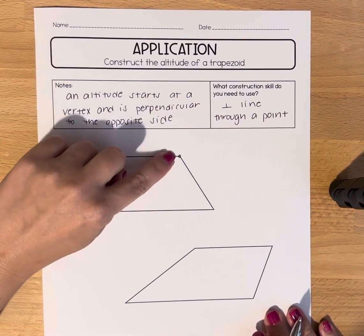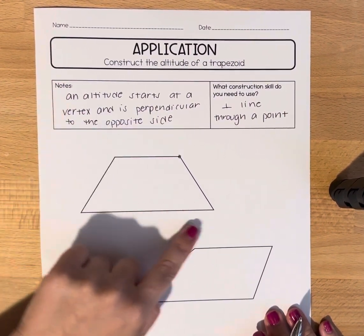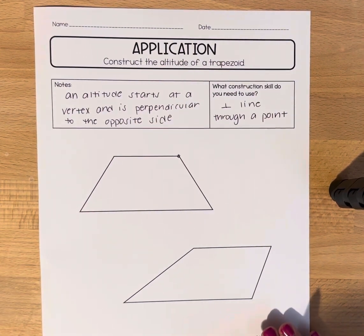So basically I want a line that goes through this point and is perpendicular to this bottom base of this trapezoid.